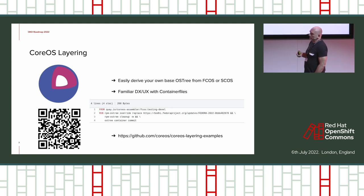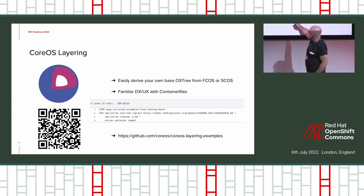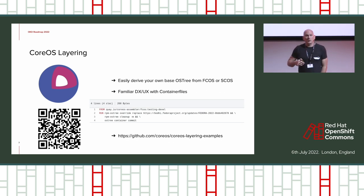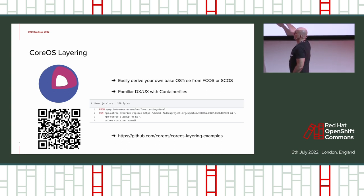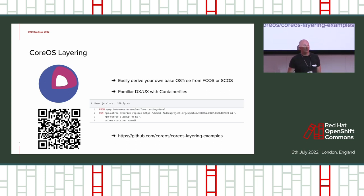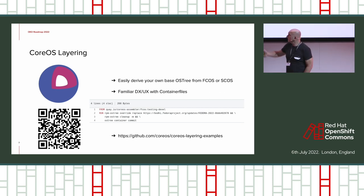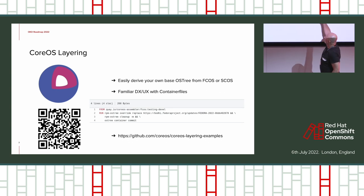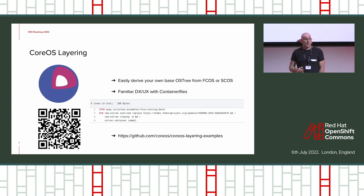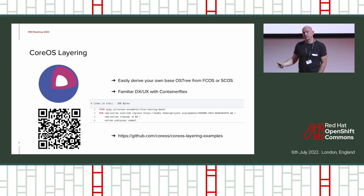If you want to customize that image, it's difficult today. When OKD is built, we can't use the Fedora CoreOS standard image — we have to customize it a little bit, and that's not an easy process. CoreOS layering is a new feature already in Fedora, and it uses Dockerfiles or container files where you can use a CoreOS image as your FROM, and then replace or add packages to create a new version of CoreOS to use as your base.